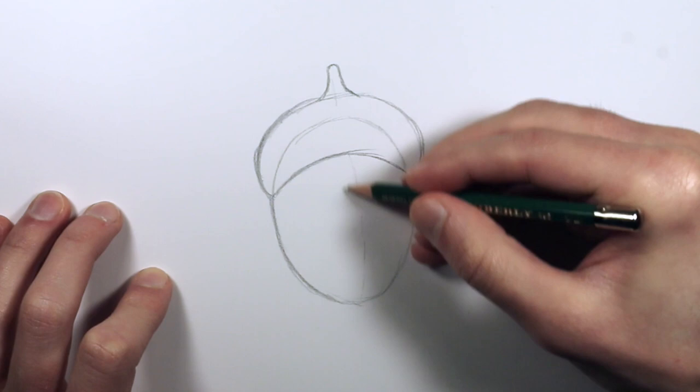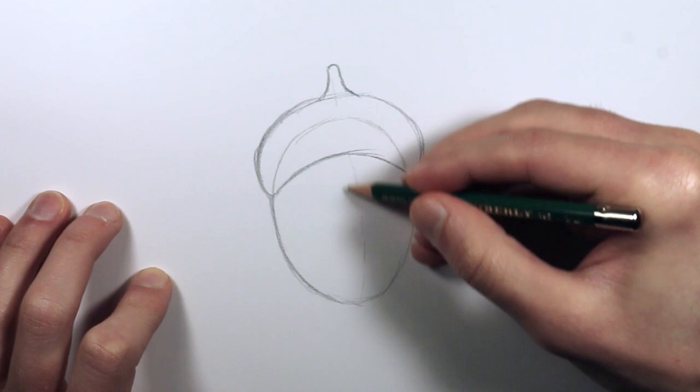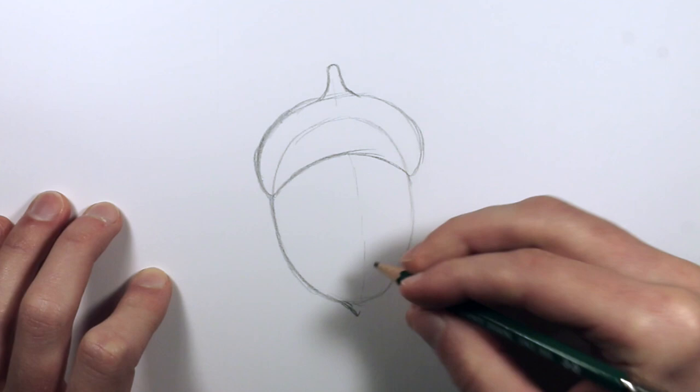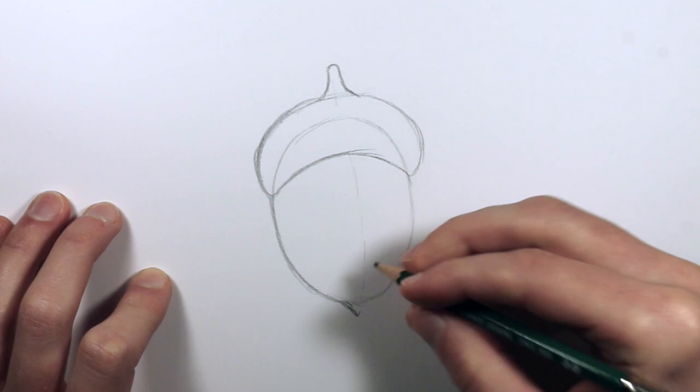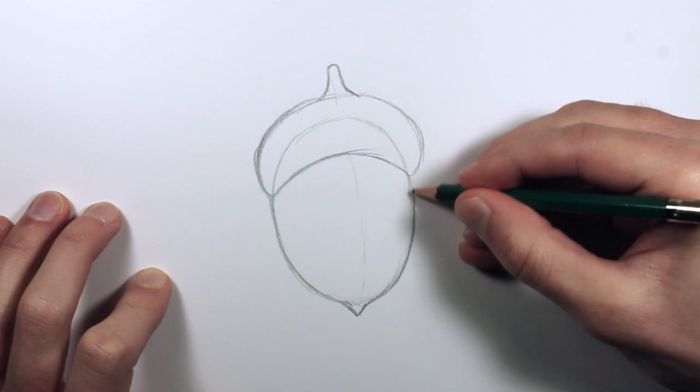And then come down to the bottom, and you're going to draw a little point that just sticks out a little bit. If you've ever picked up an acorn, you can feel that there's a little part at the bottom that's sharp. And that's what we're drawing right there.